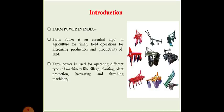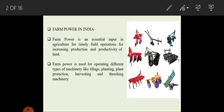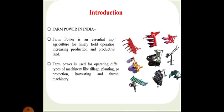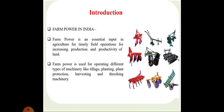Farm power is used for operating different types of machineries like tillage, planting, plant protection, harvesting and threshing machineries. Basically power stands for the working ability. Farm power in India is very important for mechanization. You can observe in the given figure there are different types of machineries which we use in the farming systems.